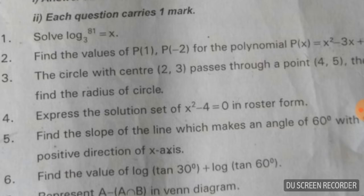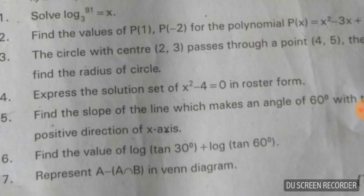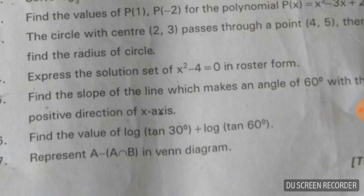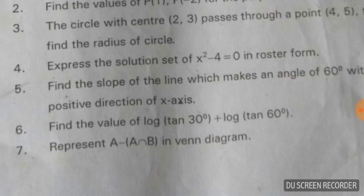Express the solution set of x² - 4 = 0 in roster form. x² - 4 = 0 means x² = 4, so x = ±2. Write in roster form: open the flower brackets, write 2 and -2, then close the flower bracket.